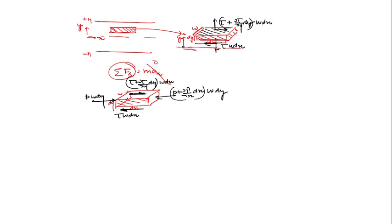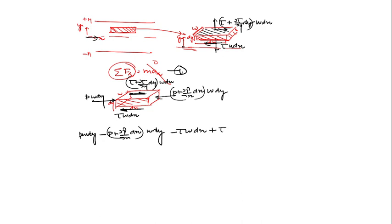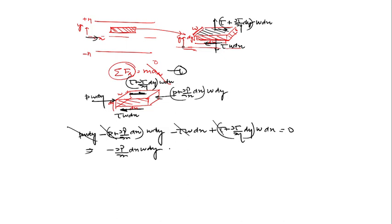Writing the force balance, taking the inlet pressure force as positive: p times w times dy minus (p plus del_p over del_x times dx) times w times dy, then minus tau times w times dx, plus (tau plus del_tau over del_y times dy) times w times dx equals zero. Canceling terms, we get: minus del_p over del_x times dx times w times dy plus del_tau over del_y times dy times w times dx equals zero.